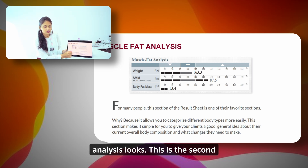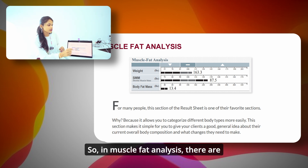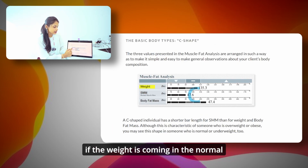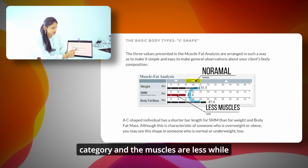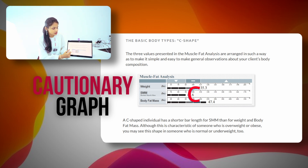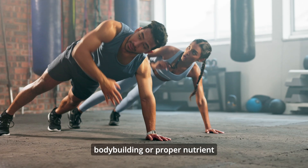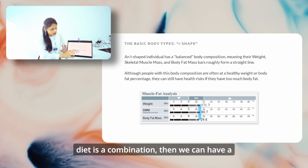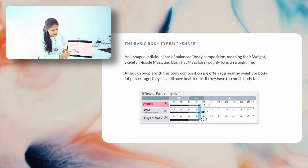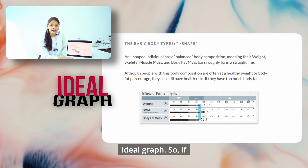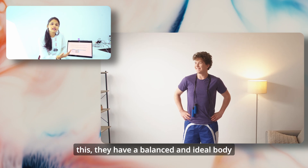This is how the muscle fat analysis looks, which is the second parameter. In muscle fat analysis there are three pointers: under, normal, and over. If the weight is coming in the normal category but muscles are less while body fat is high, it forms a C-shape graph, called a cautionary graph. Precaution must be taken to build up muscles and reduce fat. If someone has very good training, proper bodybuilding, or a proper nutrient diet, the weight, muscle mass, and body fat all come in the normal range, forming an I-shape graph — called the ideal graph. This represents a balanced and ideal body which should be maintained.